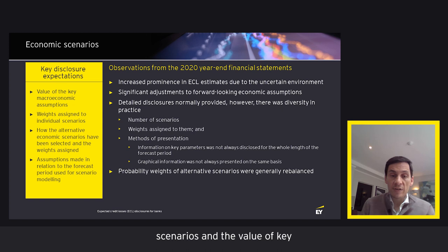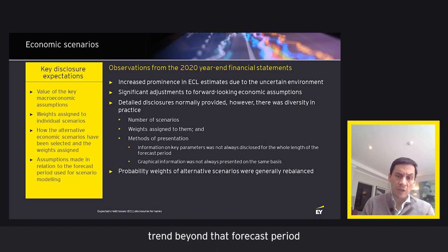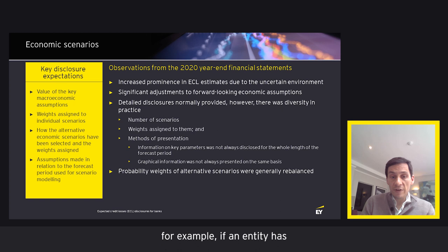Clear disclosures and the assumptions made by banks allow users to compare banks against each other and against guidance provided by economists and regulators. This way they can see, for example, if an entity has been particularly optimistic or pessimistic in its assumptions — an important factor in interpreting the ECL estimate of a particular bank.